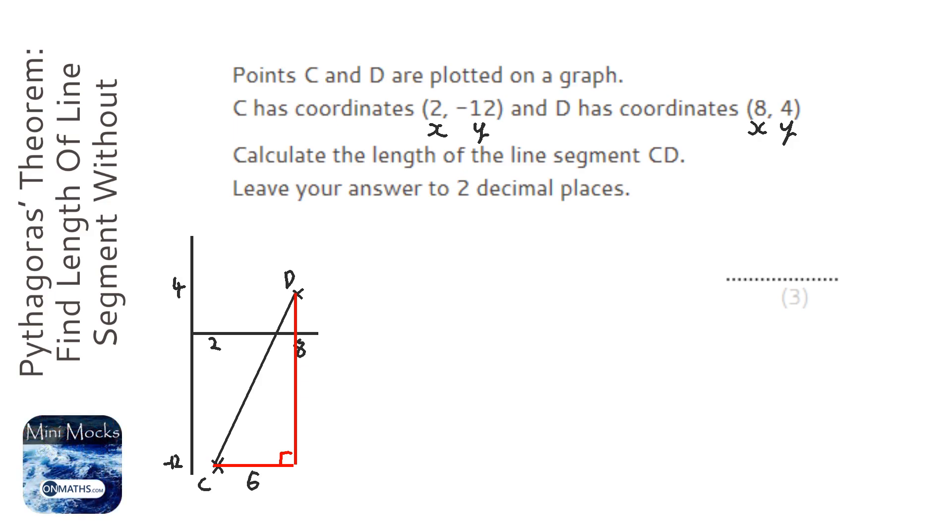So 6 jumps to the right. The up is slightly harder. We've got 12 up to the X axis and then another 4. So we've got 16. So that's going to be 16 in total.